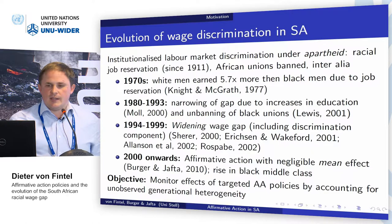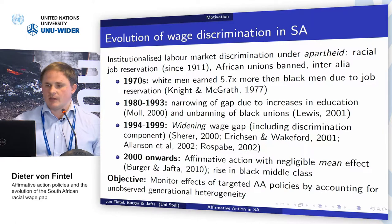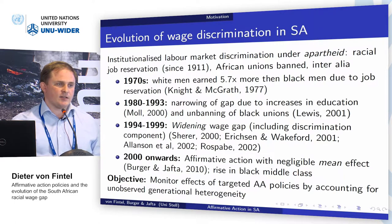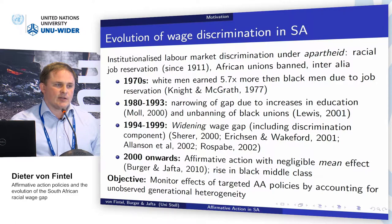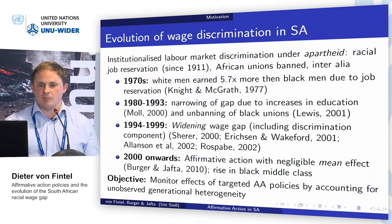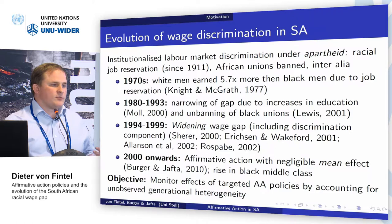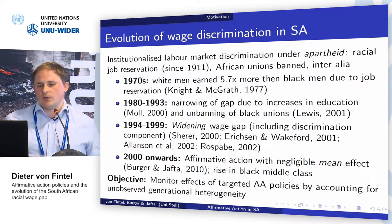To give you a background of institutionalized wage discrimination in South Africa: most of you would be aware of apartheid — grand apartheid — which basically instituted job reservation particularly favoring white individuals. However, many people don't know that this predated apartheid; job reservation actually started much earlier than 1948 when the apartheid laws were instituted. Apartheid laws also banned African unions, which really removed the bargaining power of Africans relative to their white counterparts. By the 1970s, white men earned about five and a half times more than black men, particularly due to job reservation.